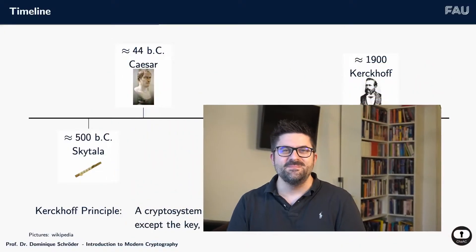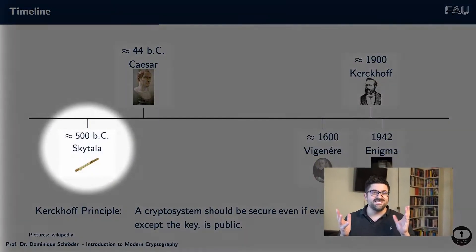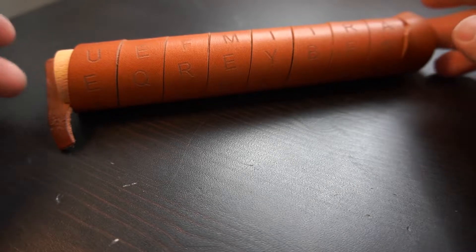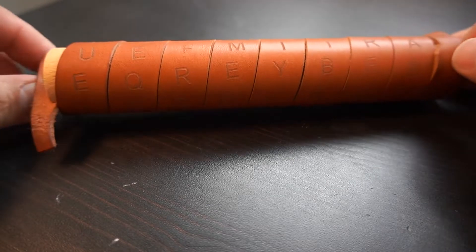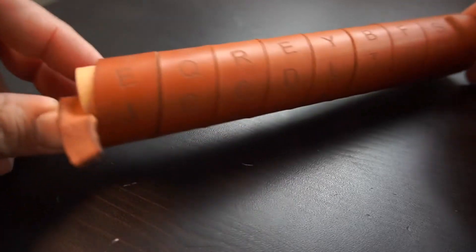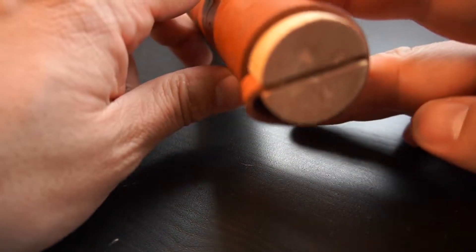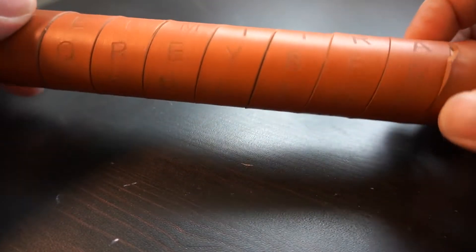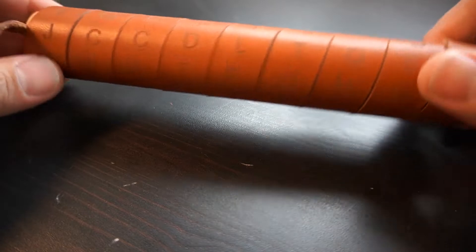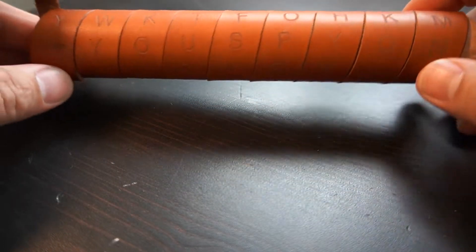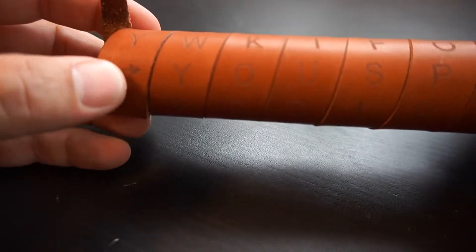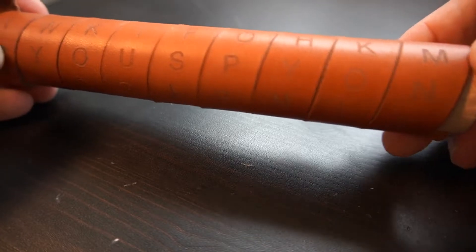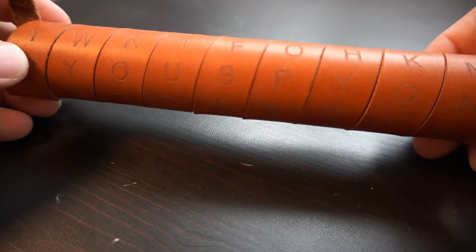So let's start this lecture with some history. We will start with the amazing Skytale and take a closer look at it. Here you can see a nice example of how crypto was done in ancient times. What you see is a wooden stick with a piece of leather wrapped around it, and you can see some letters on it. There is a pointing arrow that points to the secret message, and in this case the secret message is 'you spy on'.